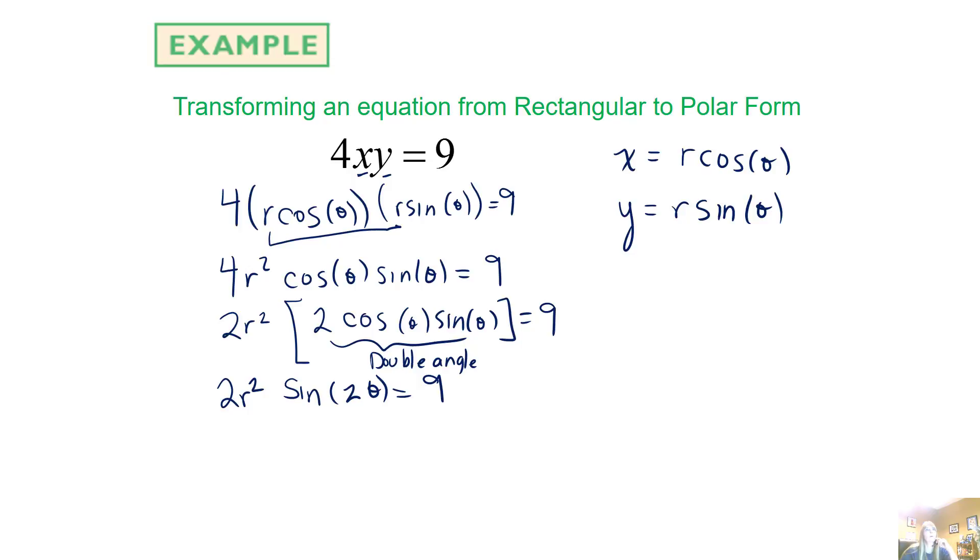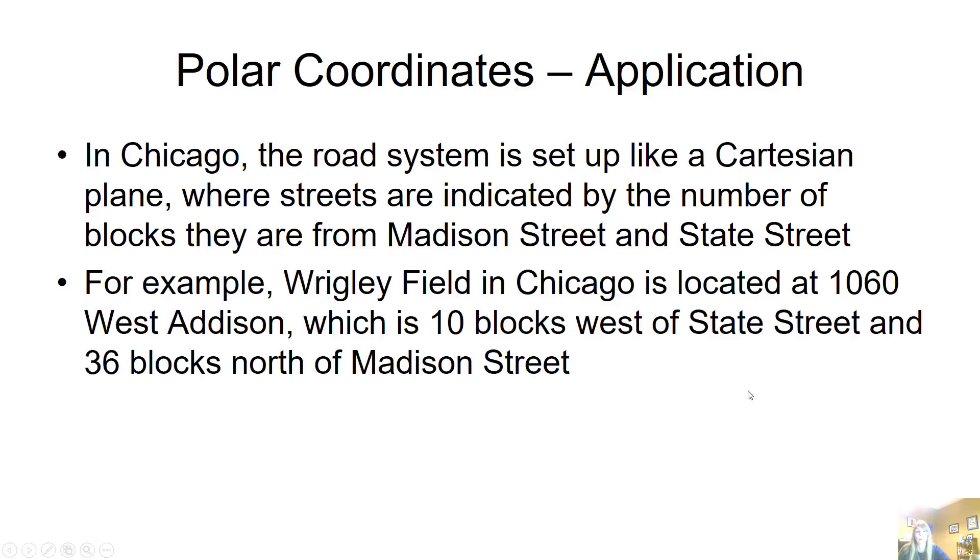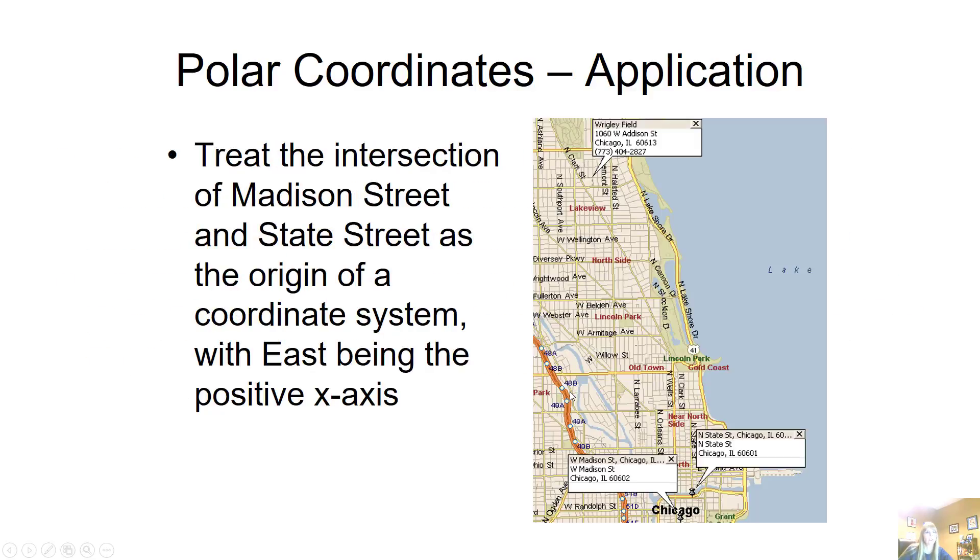So the last example is an actual application. And it talks about in Chicago, the road system is set up like a Cartesian plane where streets are indicated by the number of blocks there from Madison Street and State Street. For example, Wrigley Field, go Cubs, in Chicago is located at 1060 West Addison, which is 10 blocks west of State Street and 36 blocks north of Madison Street. So I can look at this on a map and treat the intersection of Madison and State Street as the origin.